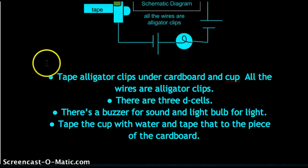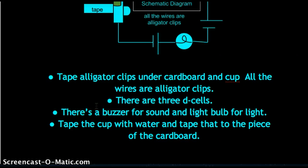So, what it says here it says tape alligator clips under cardboard and cup. All the wires are called alligator clips. There are three d-cells.